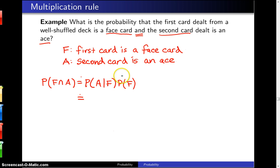Let's take care of the two pieces here. First of all, the probability of F is the probability of face card on the first draw, and there are 52 cards available for that first draw and 4 times 3, or 12 of them, are face cards—4 for the suits and then 3 for Jack, Queen, and King.